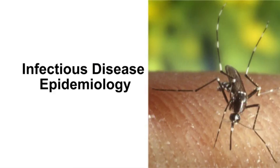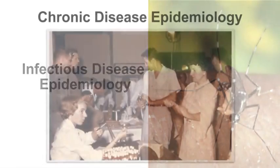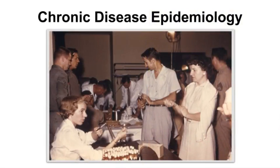Transmission may be direct or indirect via a plant or animal host, vector, or an object. Over time, there has been a change in epidemiology to also focus on the study of chronic diseases. This change came about in part due to the availability of antibiotics and vaccines that have reduced the incidence of some infectious diseases, cured some cases, or even prevented some cases of infectious diseases.